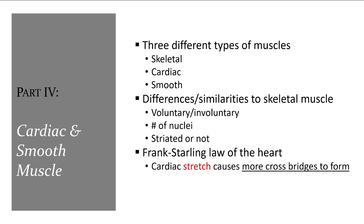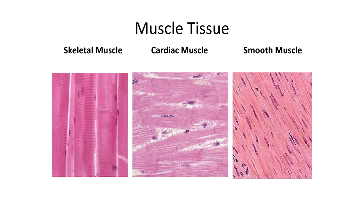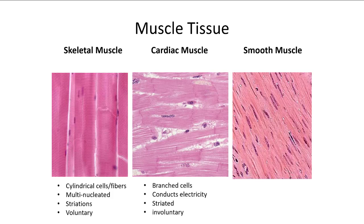There are three types of muscle tissue. Skeletal muscle consists of cylindrical cells called fibers with many nuclei — they are striated and voluntary. Cardiac muscle is also striated but has one nucleus per cell, can conduct electricity within it, and is involuntary. Smooth muscle is also involuntary, has no striations, and is found around organs and vessels.